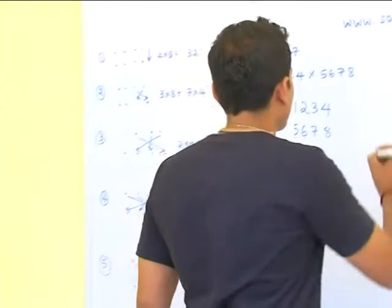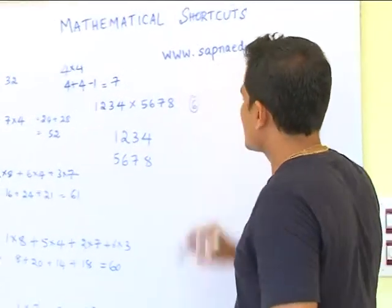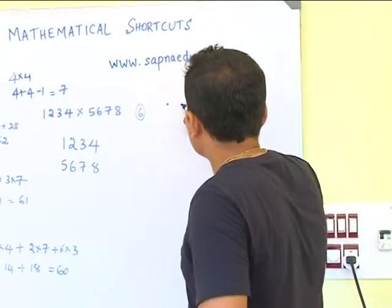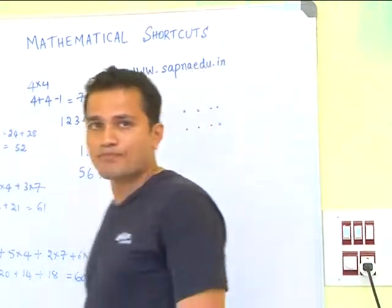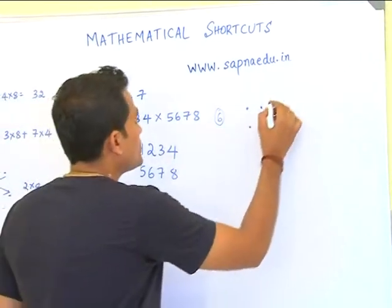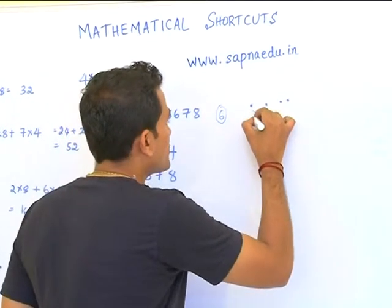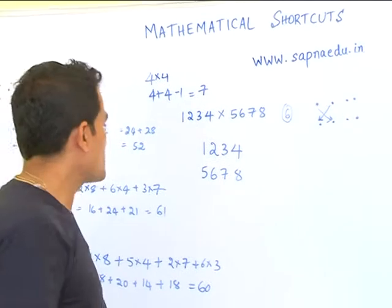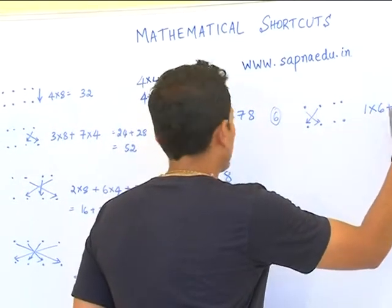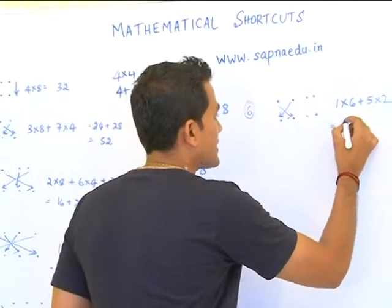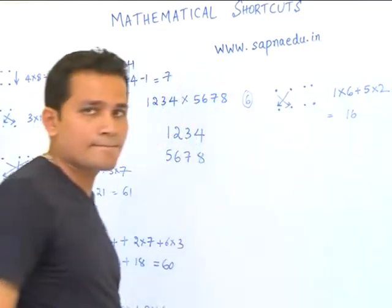The sixth step, you leave out the last two digits and perform this cross with the first two digits. That will be one into six plus five into two, which equals six plus ten, sixteen.